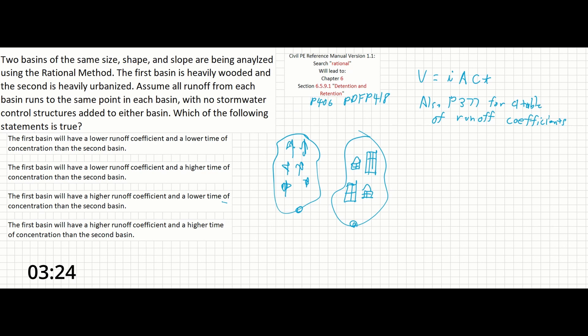The point of the problem is to determine whether or not you understand runoff coefficients and times of concentration as they apply to the real world. Since the first basin is heavily wooded, let's start by going to that table of runoff coefficients. If we look for unimproved areas we can see that the runoff coefficient is between 0.1 and 0.3.